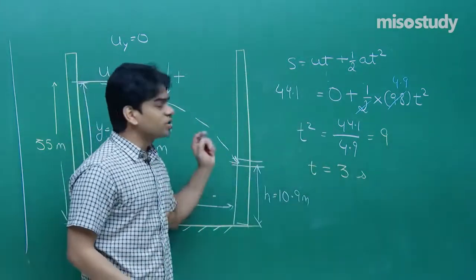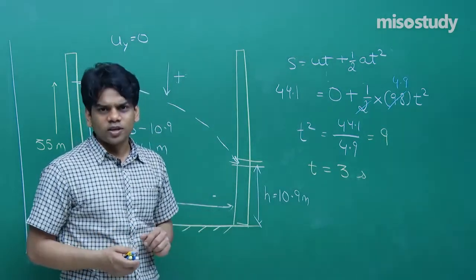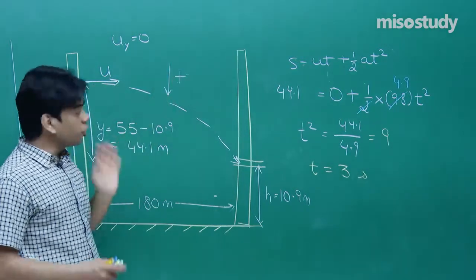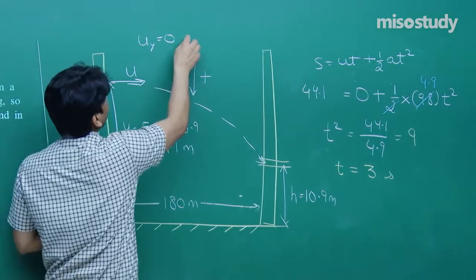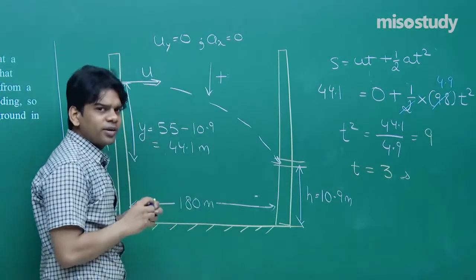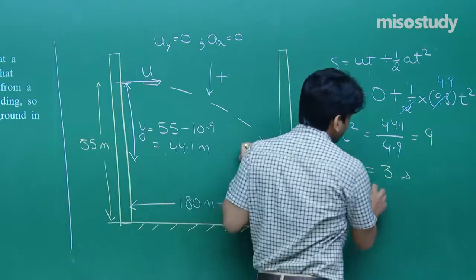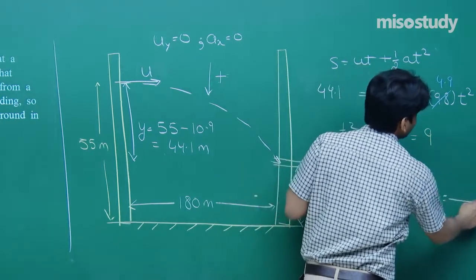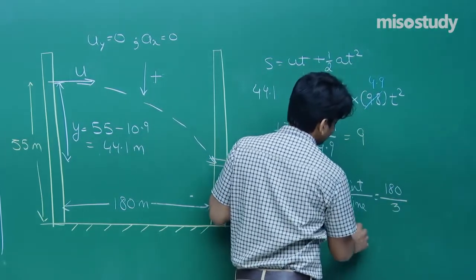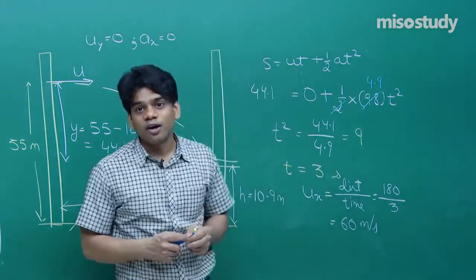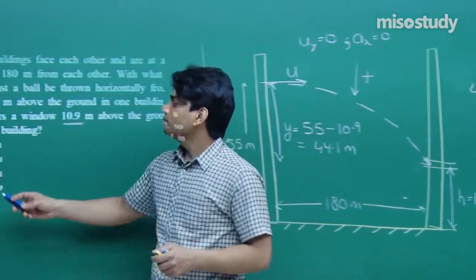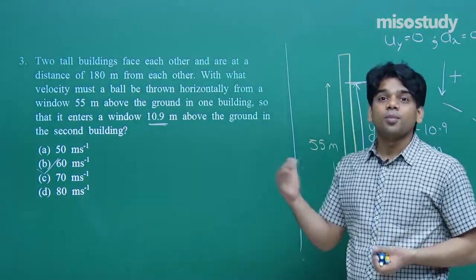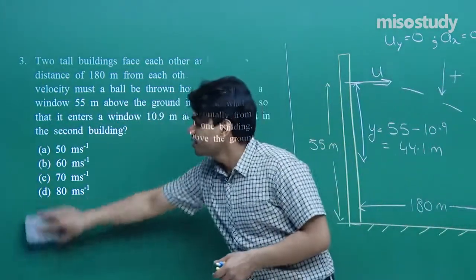There is no acceleration along the horizontal direction. The initial horizontal speed u_x = distance / time = 180 / 3 = 60 m/s. So you must project the ball horizontally at 60 m/s. Option b, 60 m/s, is the correct answer.